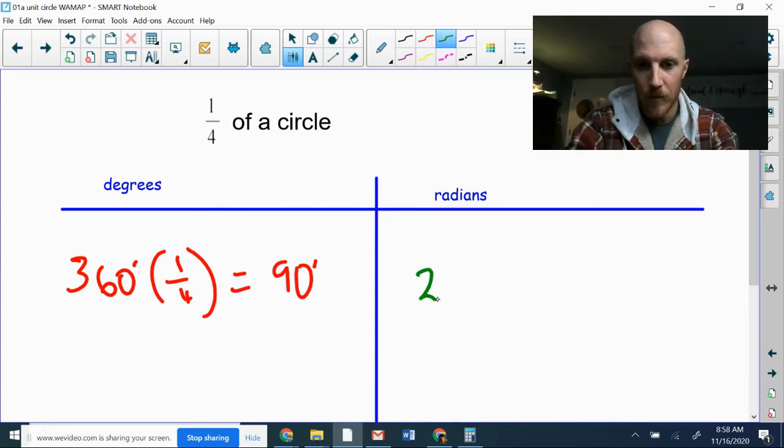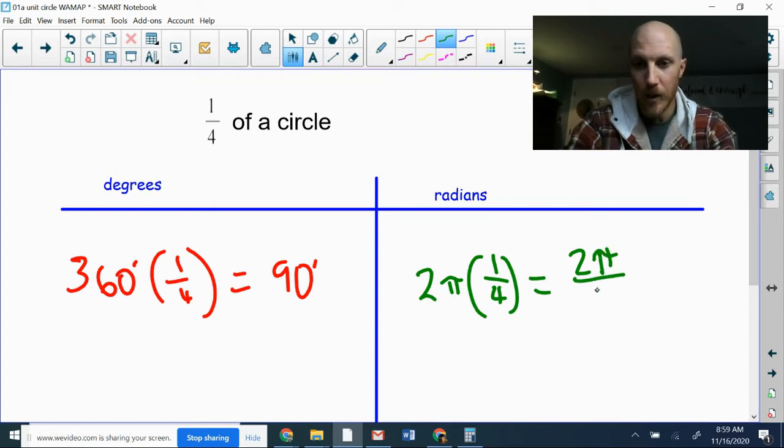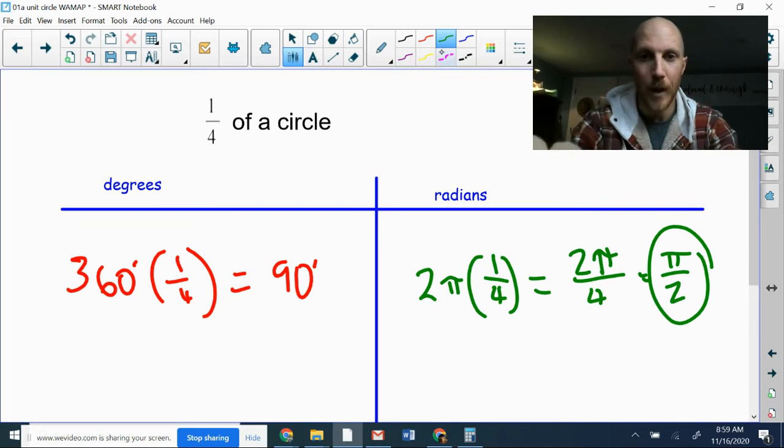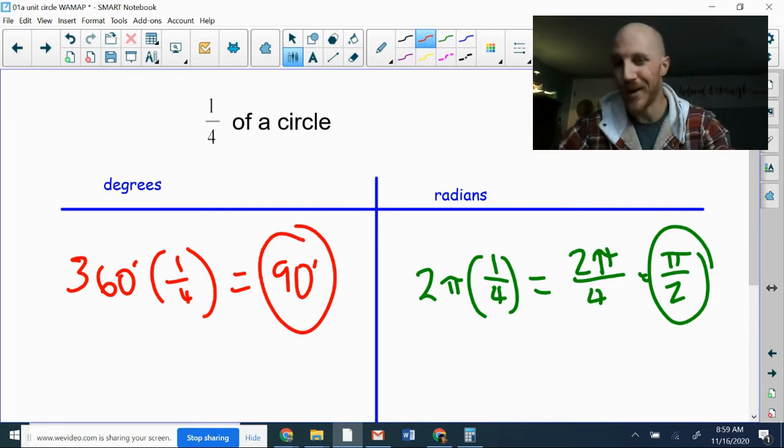In radians, I know the whole circle is 2π, and I only want one fourth of that, so I'm going to multiply, and we get 2π/4. π/2. One half π.